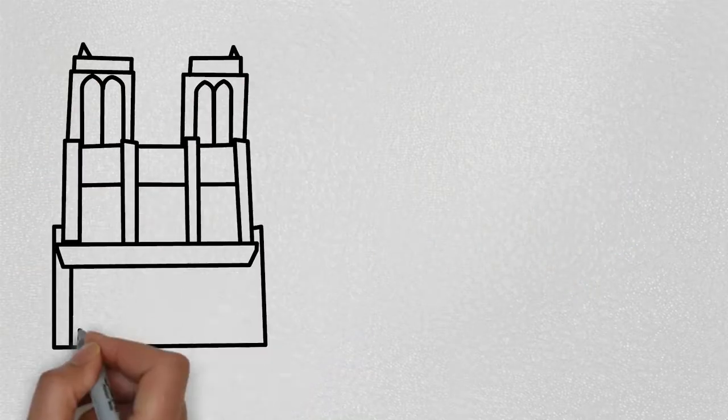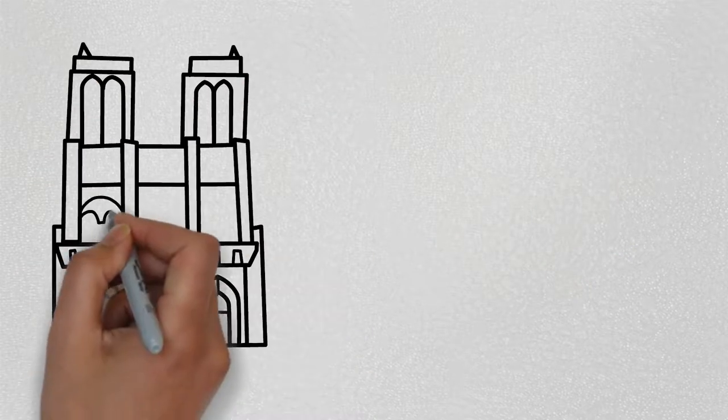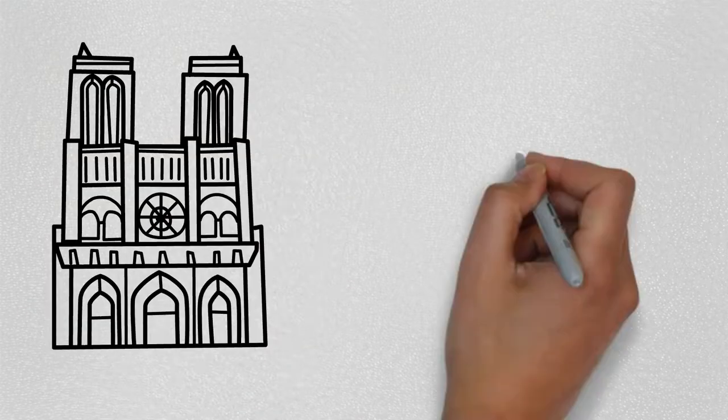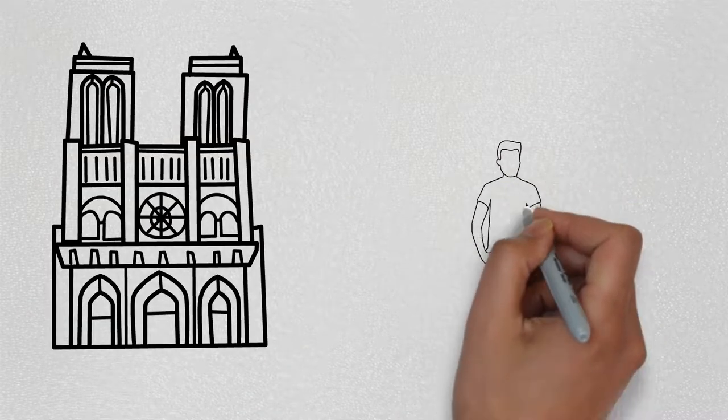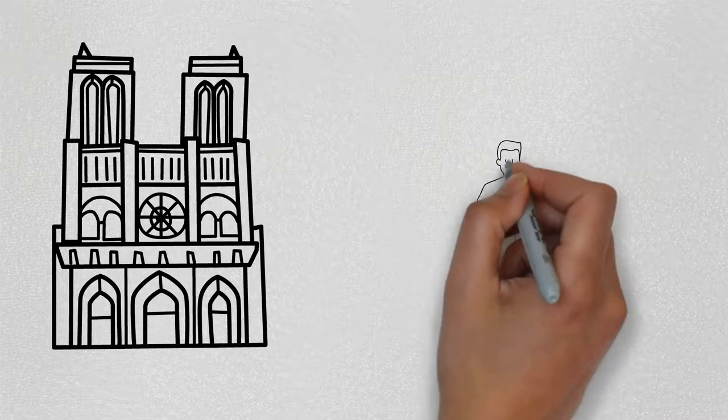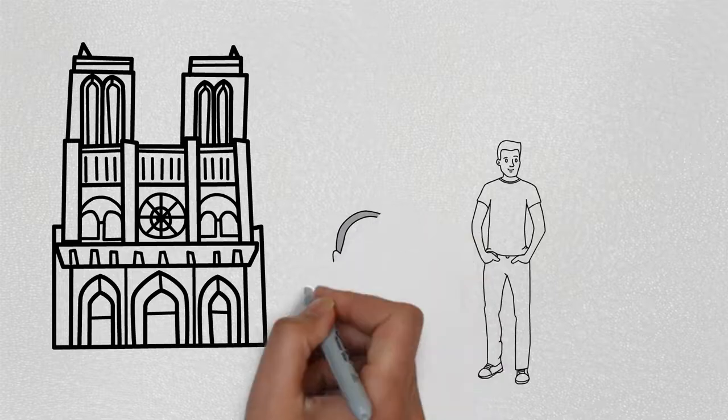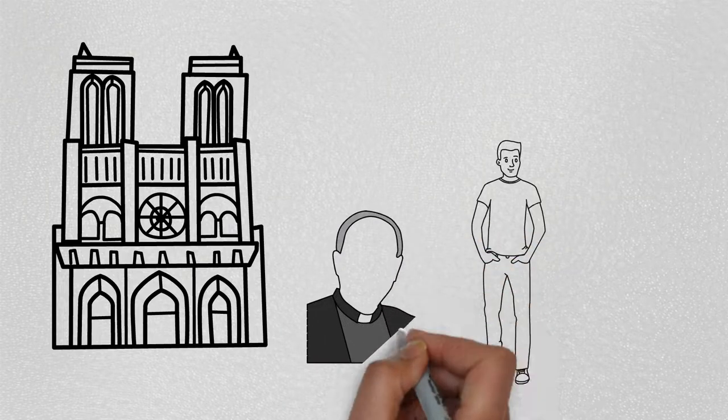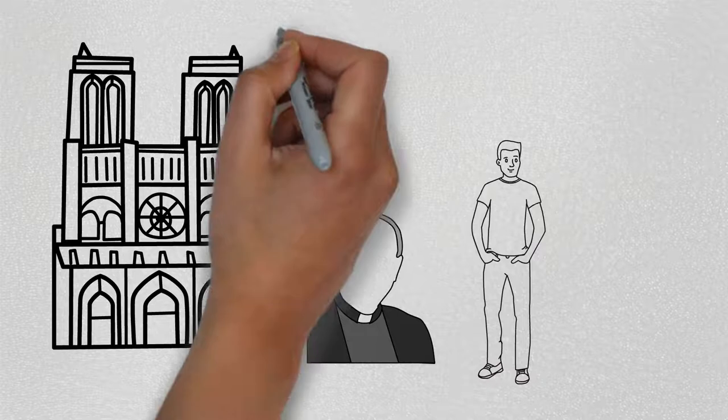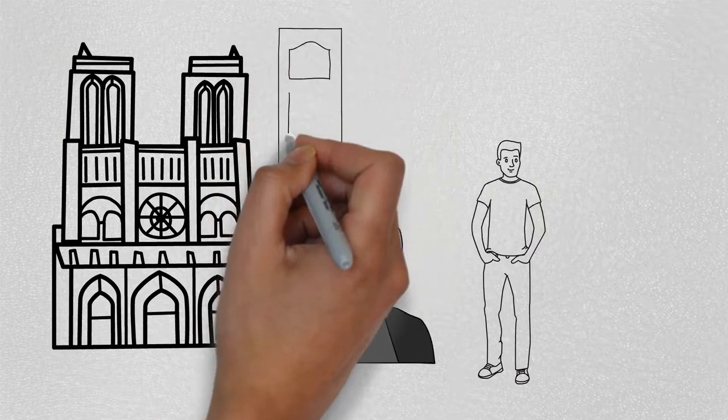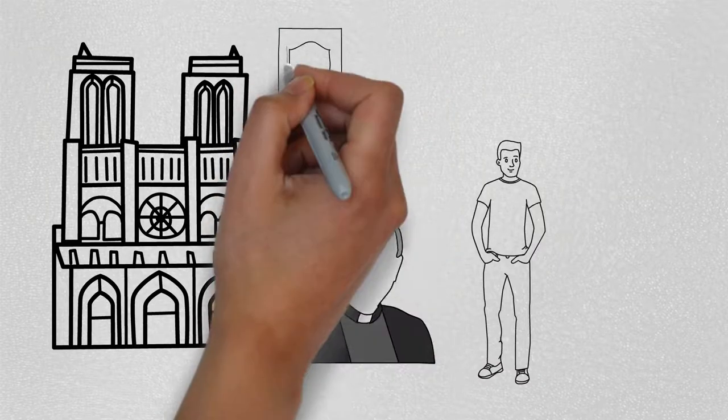At work, K is tasked with showing an important Italian client of the bank around the cathedral. They arrange to meet there, but the Italian doesn't arrive. A priest enters the pulpit of the dark church and addresses K by name. He tells him that he is the prison chaplain, and he has come to talk about the case, which he understands is not going well.